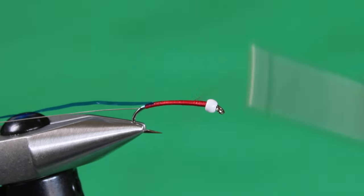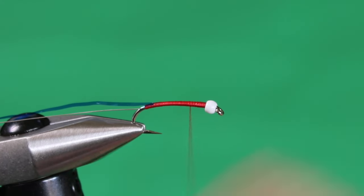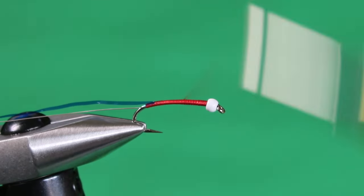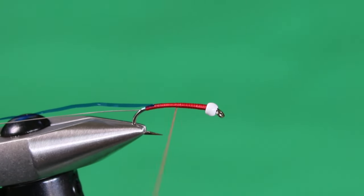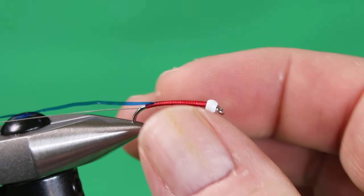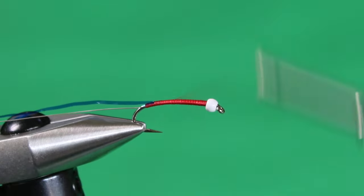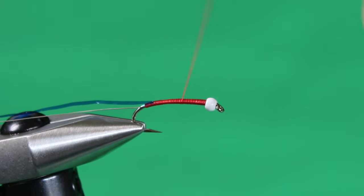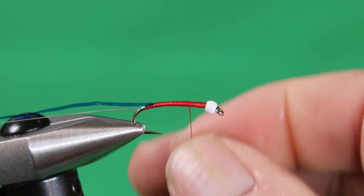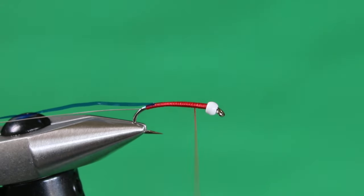When you're building up these tapers and you're going to put an overbody over this fly like we are with the buzzer wrap, you've got to factor in the thickness of that material as well. This buzzer wraps pretty thin so I can almost do this as though I was going to do a thread body. But if I was using something like a scud back for the overbody, then I might not have so much thread underbody because the thickness of that scud back is going to add to the overall thickness of the fly.